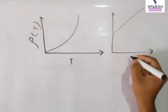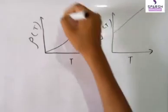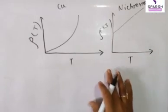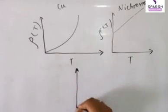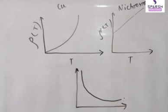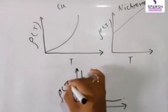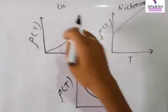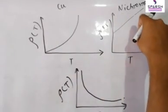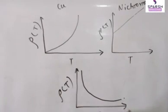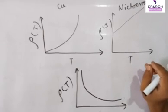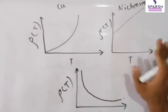In the graph, the first curve is for copper and the second graph is for Nichrome — this is a very important graph, study it carefully and revise. The third graph is for semiconductors, where the graph shows resistivity decreasing with temperature. Why does it decrease? Because as temperature increases, the number of free electrons increases. For conductors the number of electrons is fixed, but here it increases. In the relation ρ = m/(ne²τ), n is inversely proportional to ρ, so as the number of free electrons increases, resistivity decreases. These are the three graphs.